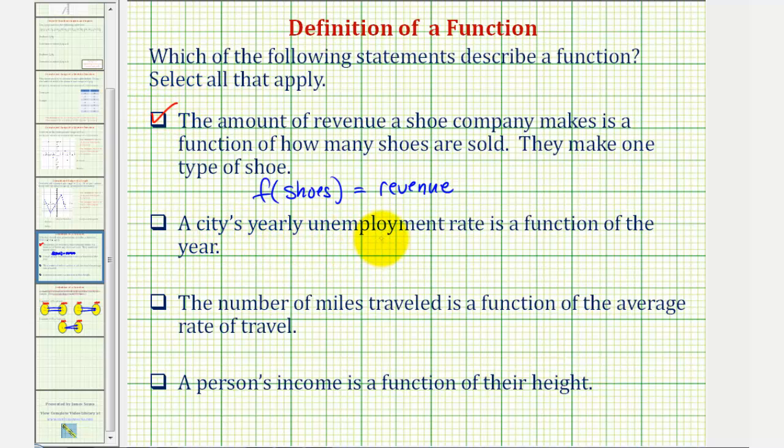Next, a city's yearly unemployment rate is a function of the year. If this is a function, the input would be the year and the output would be the unemployment rate. We would have f of the year